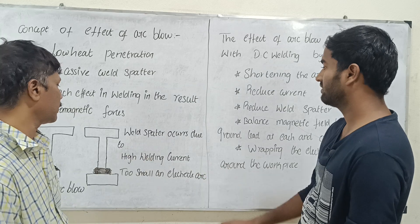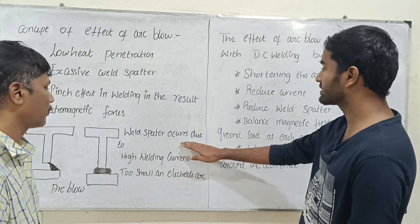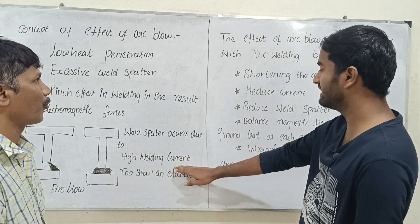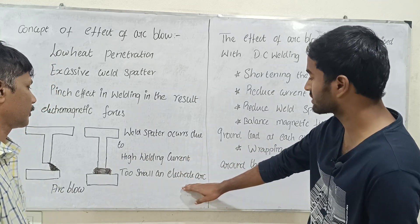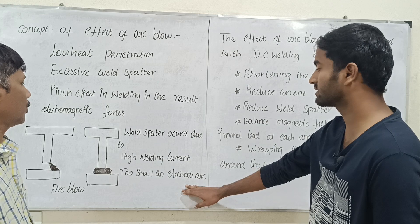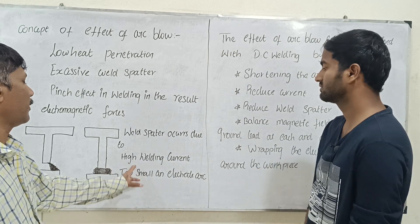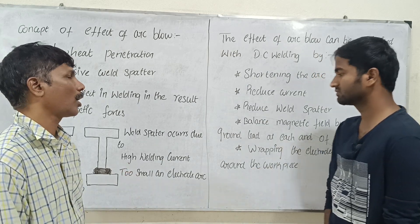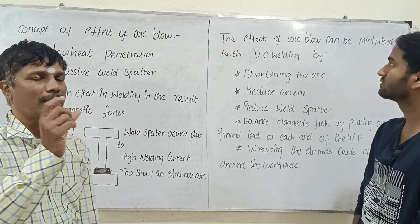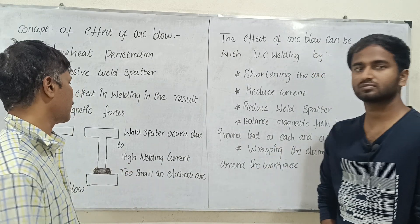Weld spatter is due to high welding current and too small an electrode arc. We need to understand the causes of weld spatter in relation to arc blow.